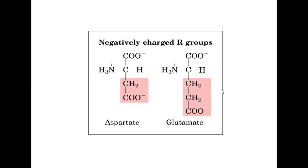So if we have the positively charged ones, we can have the negatively charged ones. These are the two amino acids which have an overall negative charge given to them because of their carboxyl group in their R-substituents. These are aspartate and glutamate.